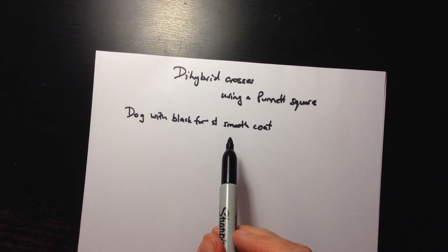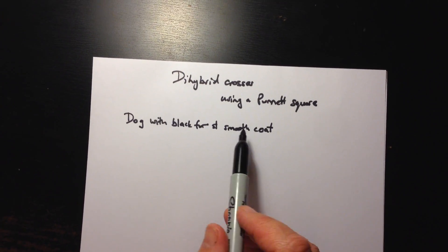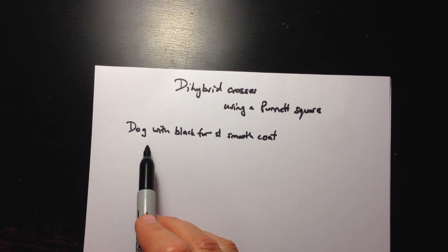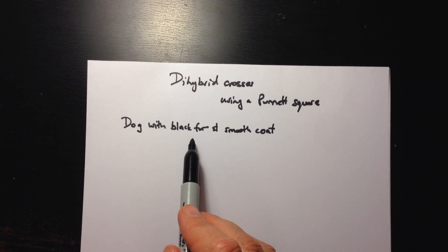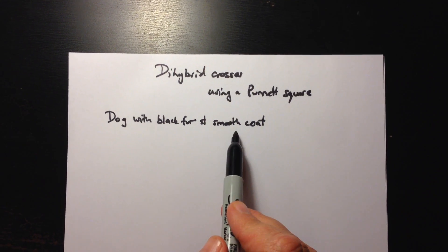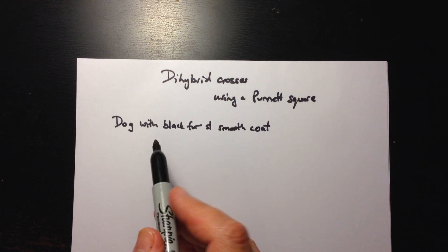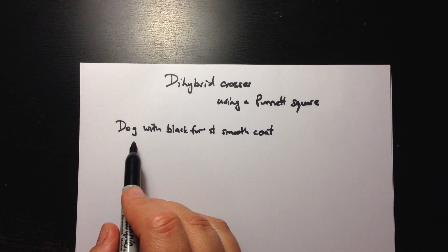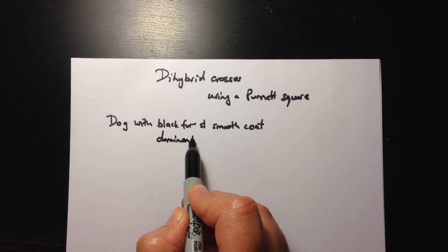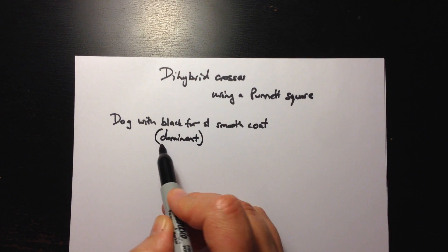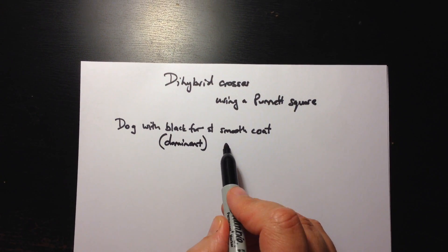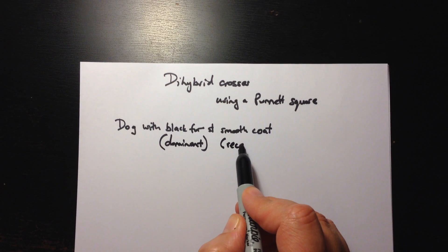I'm going to show you how to set up a dihybrid cross using a Punnett square. Let's use the example of a dog with black fur and a smooth coat. These are two different genetic traits. The black fur trait is the dominant trait, and the smooth coat is a recessive trait.